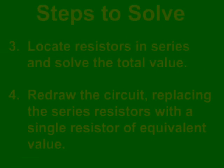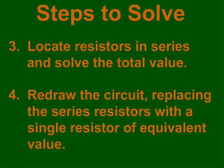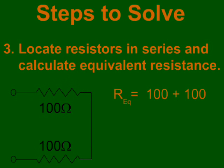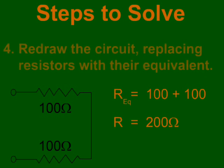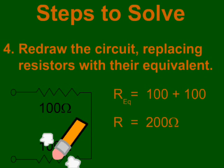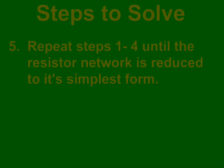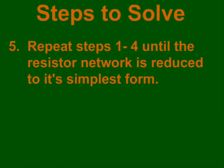Next, we look for series resistances and again reduce them by combining them into a single resistor. We then redraw the circuit with this new resistance in place. Continue eliminating parallel and series resistances until the circuit can no longer be simplified.